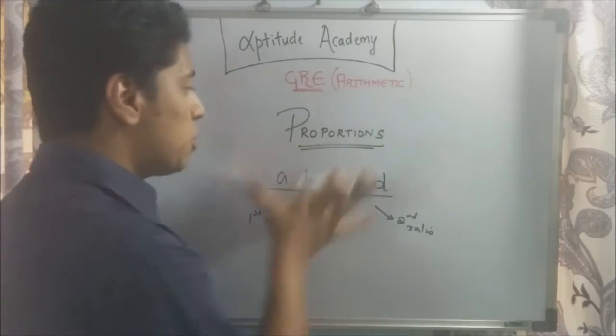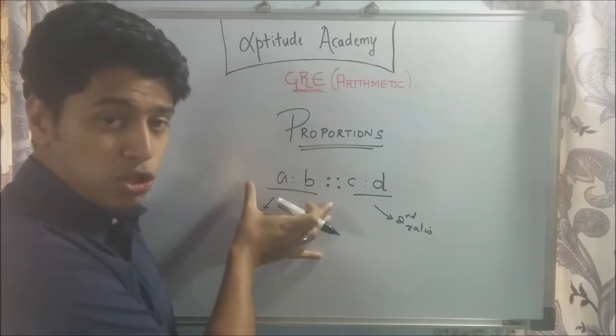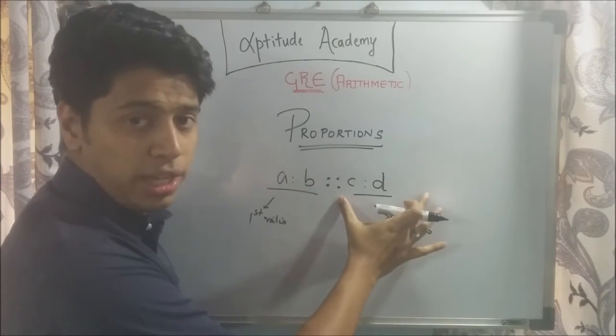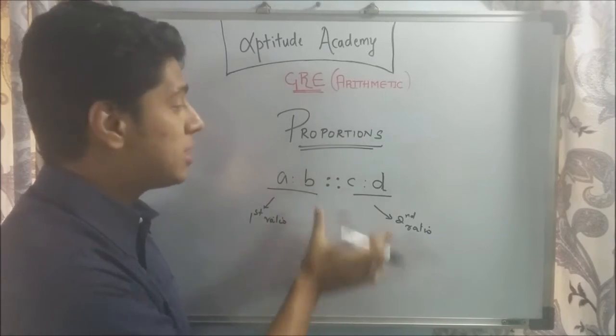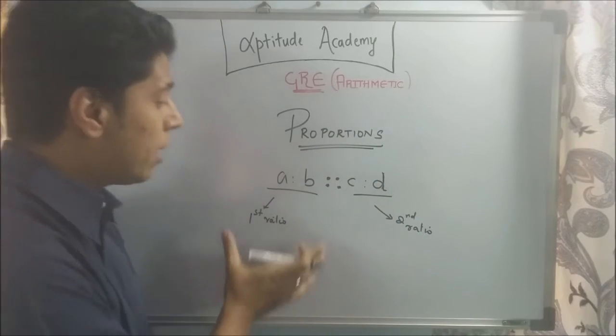But what if we start relating ratios? What are they called? They're called proportions. So proportions are basically ways for you to relate ratios together. So suppose you have one ratio, A is to B, and you have a second ratio, C is to D. Now the only way to relate these two ratios is by proportions. And the proportion symbol is the same as.